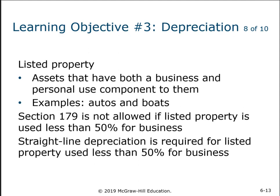Listed property must be listed separately on Form 4562, while non-listed property is summarized in one line. The IRS designates certain assets as listed property because they believe these are things you could easily be using for personal use — autos and boats are the primary examples. Cell phones used to be included, but the IRS decided those are so ubiquitous they removed them. So it's mainly autos and boats now.